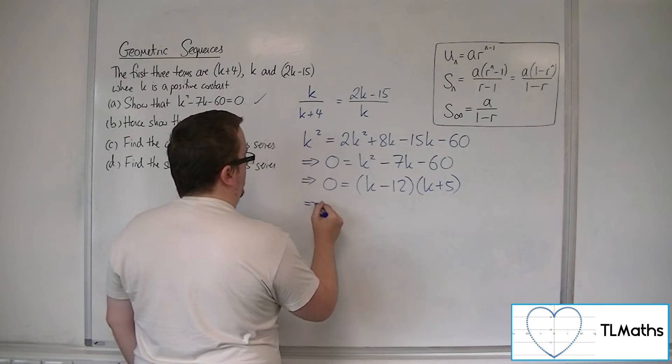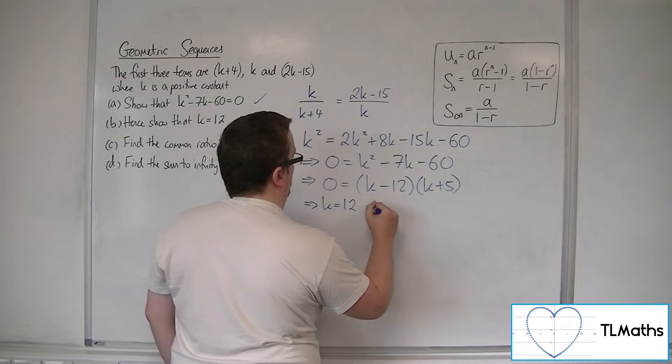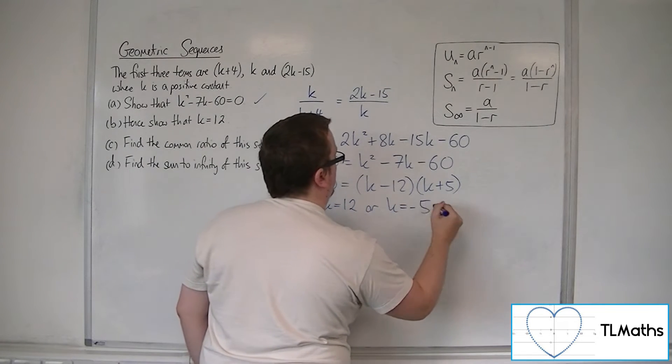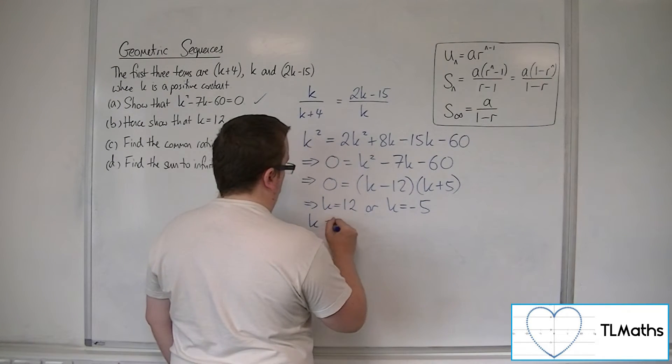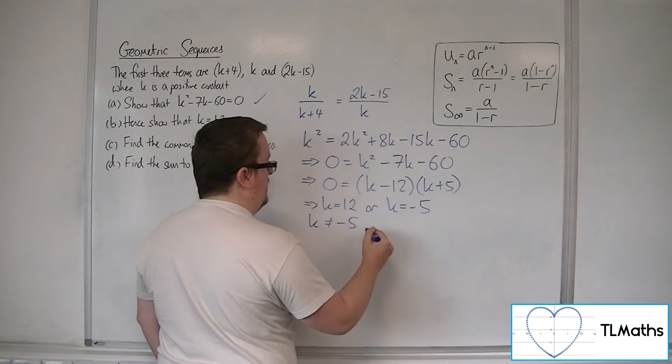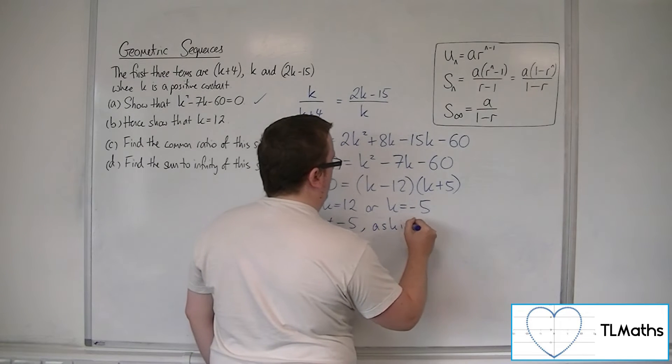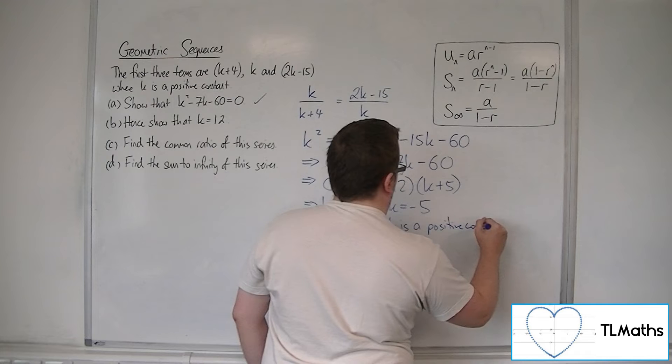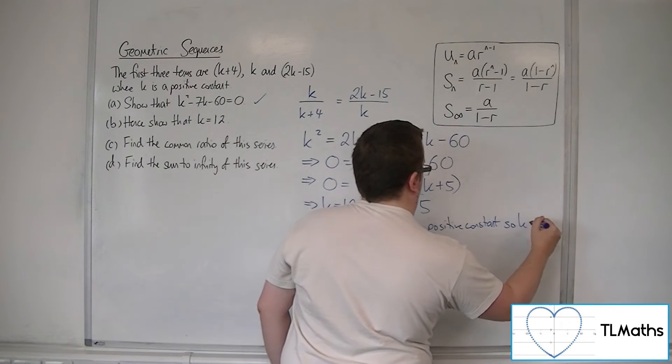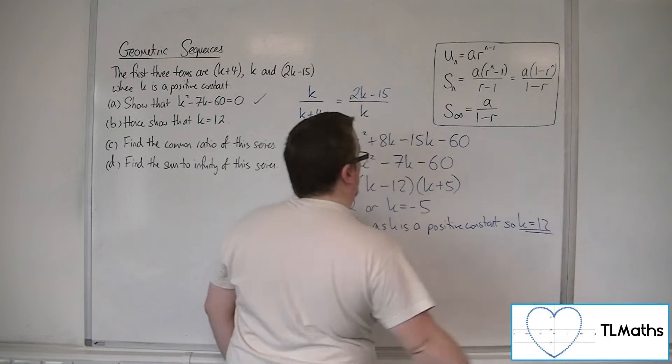So either k equals 12 or k equals minus 5. Now, k cannot be equal to minus 5 as k is a positive constant as identified in the question. So k must be 12.